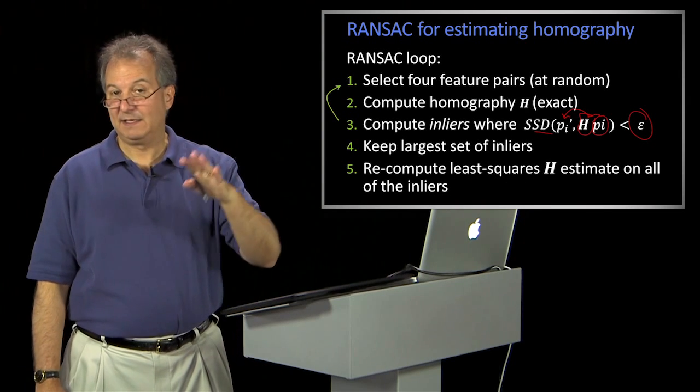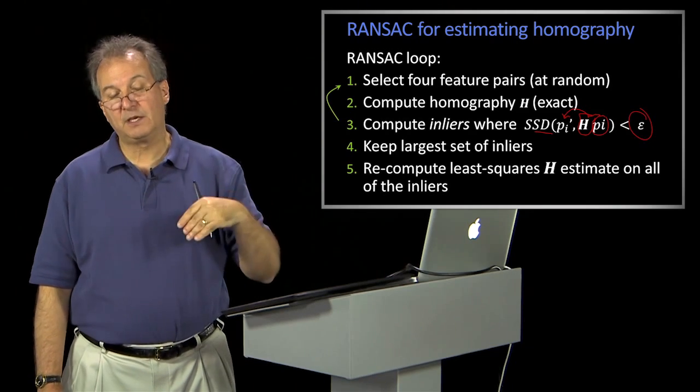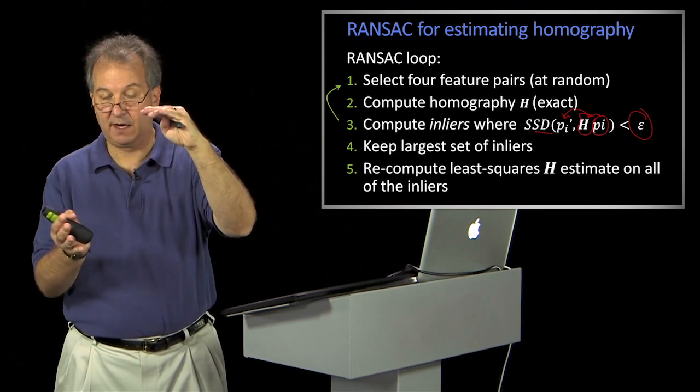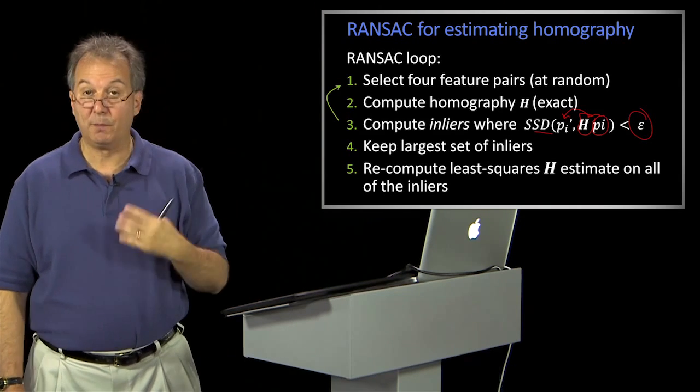And then you keep the one with the largest set of inliers. You then compute, you don't use the old H. You compute the least squares, the best H, for that set of inliers. And that'll be a much more robust estimate of the transform. And that's what we're looking for.